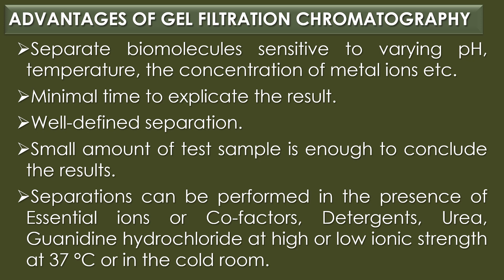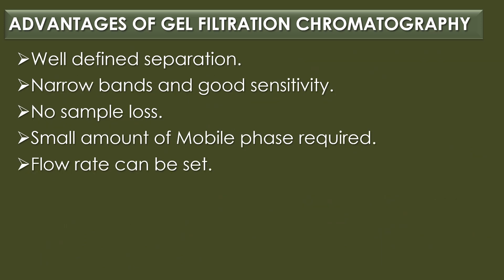Advantages of gel filtration chromatography include: it can separate biomolecules sensitive to varying pH, temperature, and concentration of metal ions. It takes minimal time to obtain results and gives well-defined separation. Only a small amount of test sample is needed. Separations can be performed in the presence of essential ions or cofactors, detergents, urea, or guanidine hydrochloride at high or low ionic strength at 37°C or in the cold room. Other advantages include narrow bands, good sensitivity, no sample loss, small amount of mobile phase required, and adjustable flow rate.